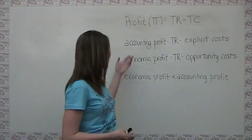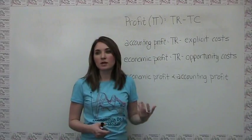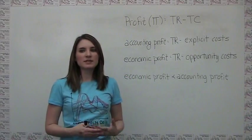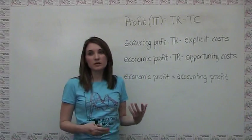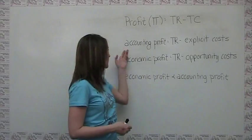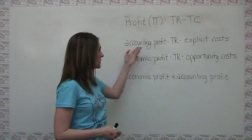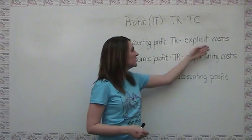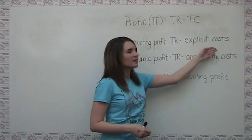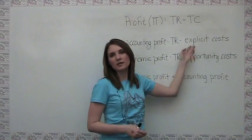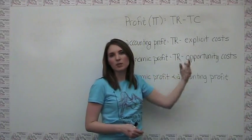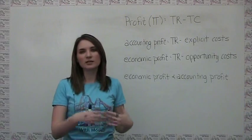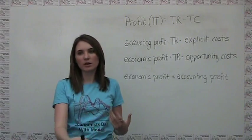Accounting profit is simply dollars in minus dollars out, and it's what most of us think about when we hear the word profit. So accounting profit is just total revenue, or dollars in, minus our explicit costs — those things that we're physically writing a check, paying cash, or giving a credit card for.